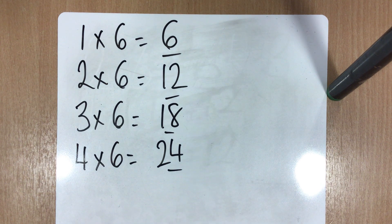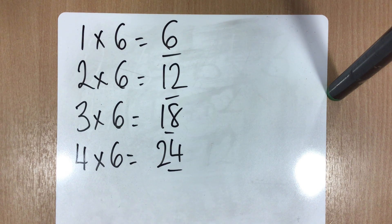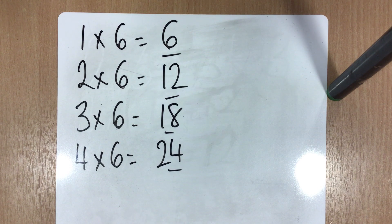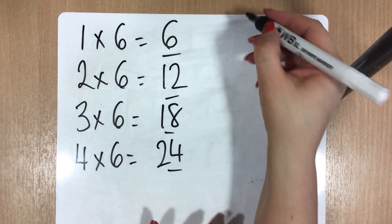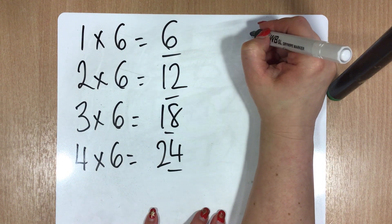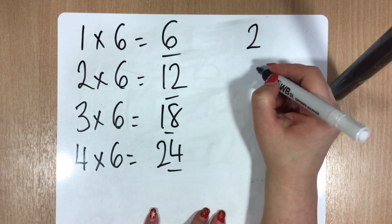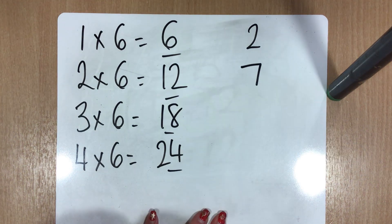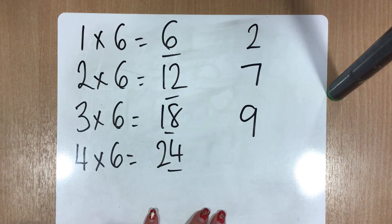So if you know your times tables, you should have a really good insight into what multiples are. I want you to have a little practice and I want you to work out the multiples for 2, 7, and 9.